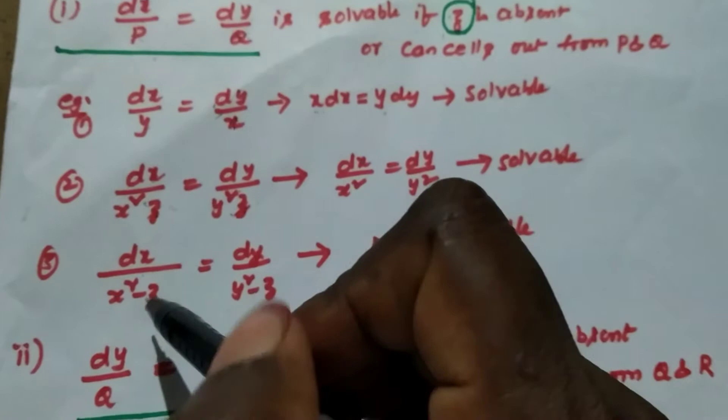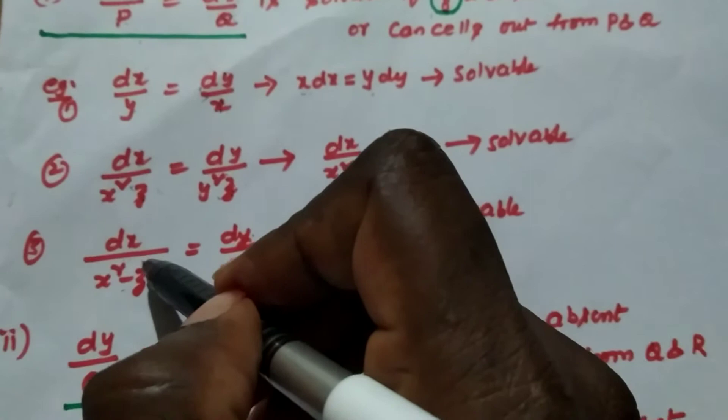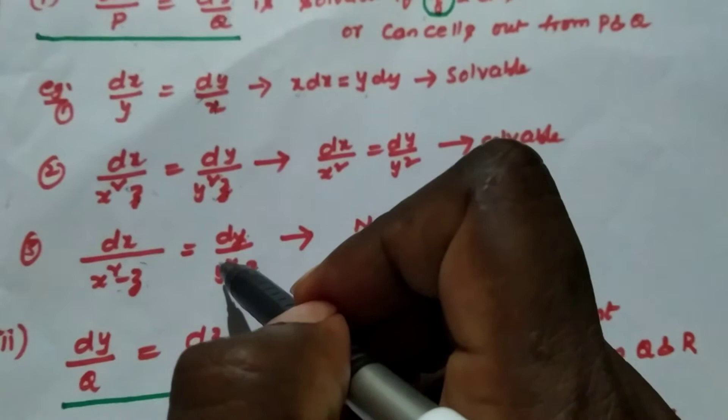But in the third example, the denominator of dx is x squared minus z and the denominator of dy is y squared minus z. In this case we cannot remove z from these two denominators, so we are not able to find the solution from these two fractions.